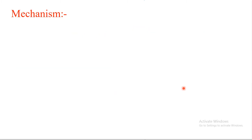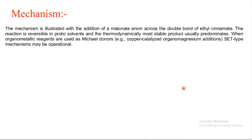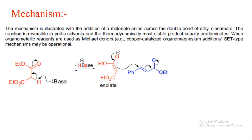If you see the mechanism of Michael addition: the base acquires the proton from the Michael donor to form the enolate. This enolate then attacks on the alpha-beta unsaturated compound. The oxygen anion resonates, and the bond resonates from the first position to the fourth position — which is why it is called 1,4-addition.